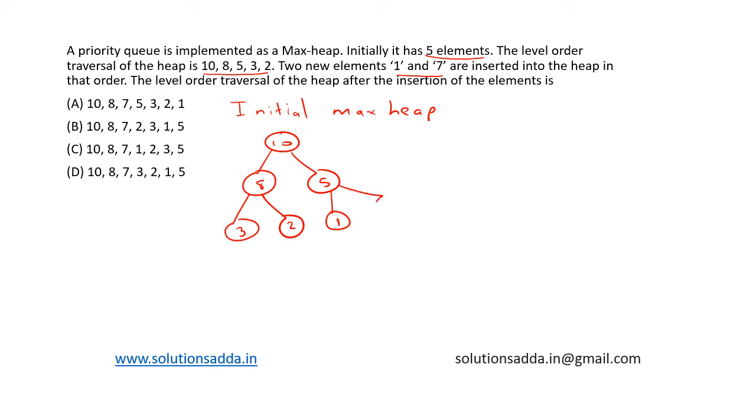Next we insert 7. Since we're inserting 7, the max heap property is violated because 7 is greater than 5, so these two need to be swapped.